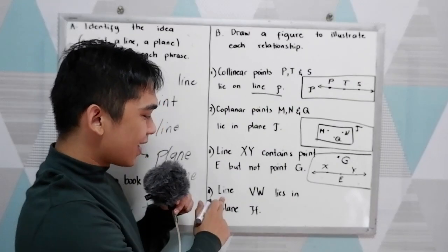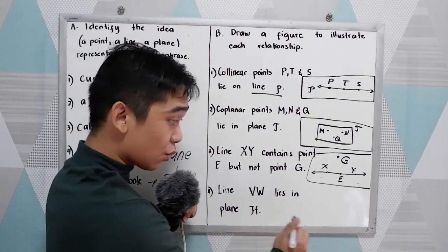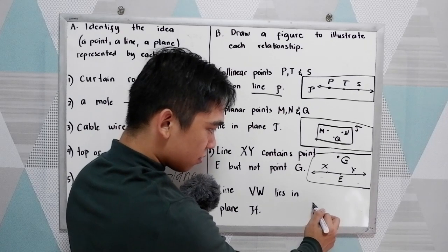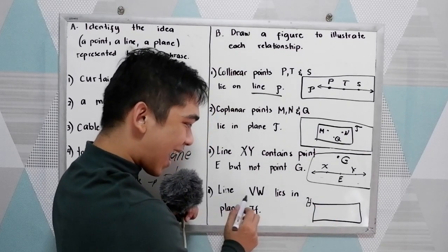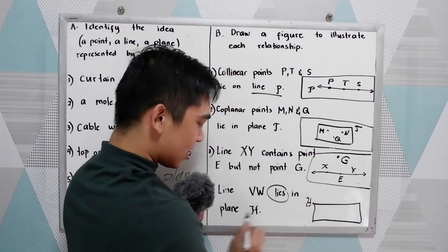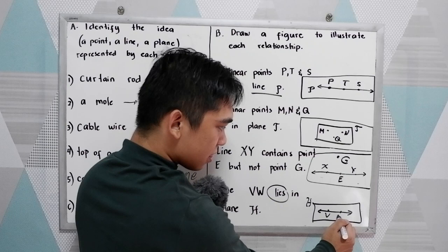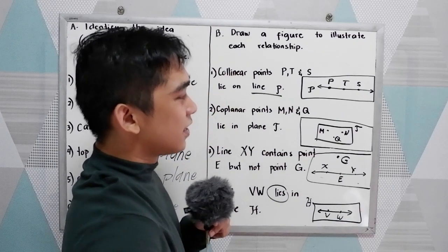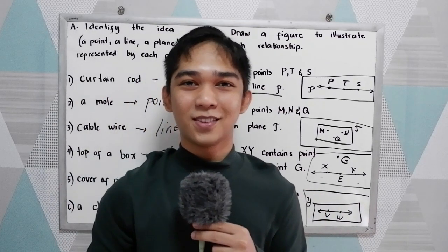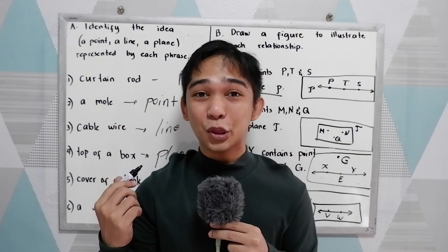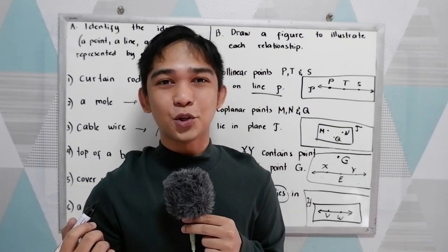And number four, line VW lies in a plane H. So we have H, plane H. Let's say this is our plane H. Then a line lies in plane H. So we have line VW. And now we're done in our activity A and B. Did you understand the basic undefined terms in geometry? Thank you for watching Senior Pablo TV.